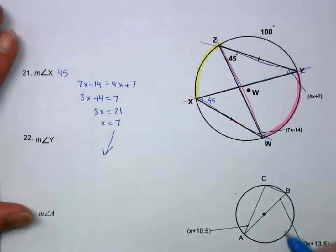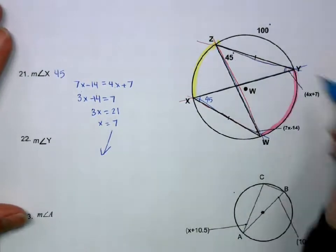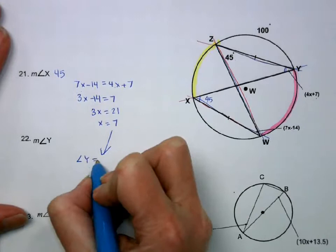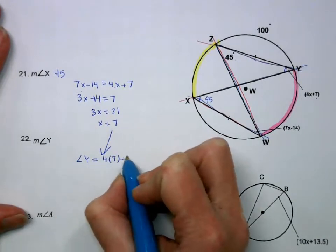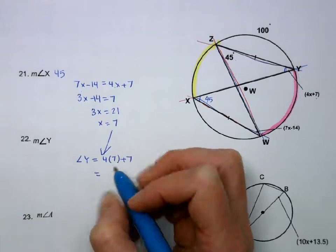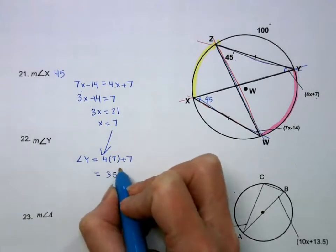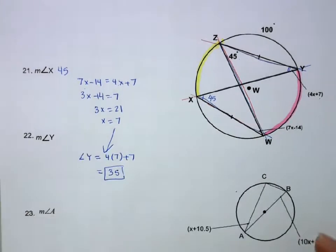Then I want to plug it back in to get the measure of the angle. So angle Y is going to be 4 times 7 plus 7, which is 35. Okay, so don't forget to plug it back in to get the angle.